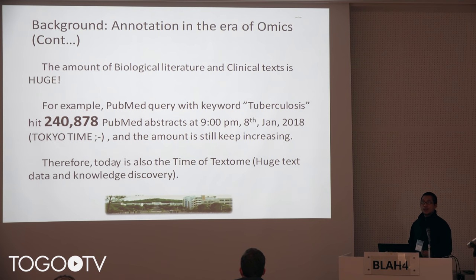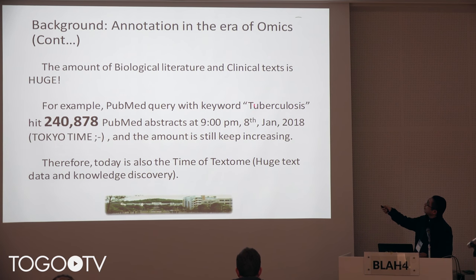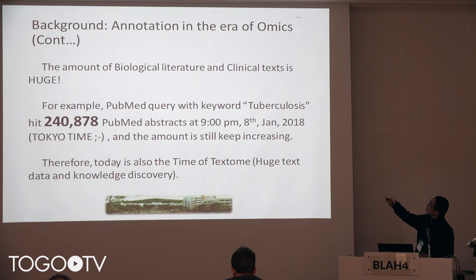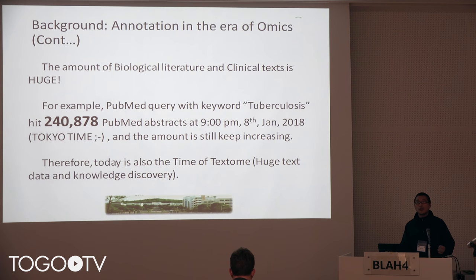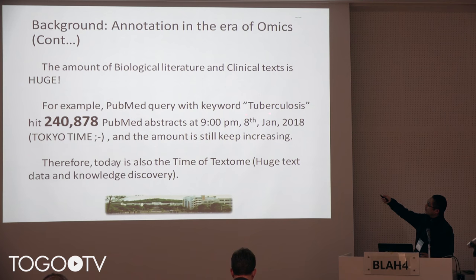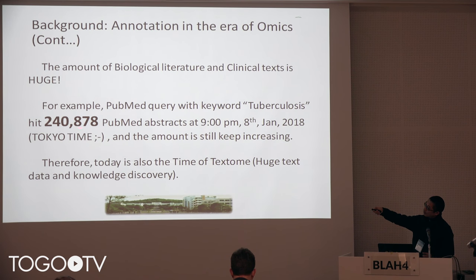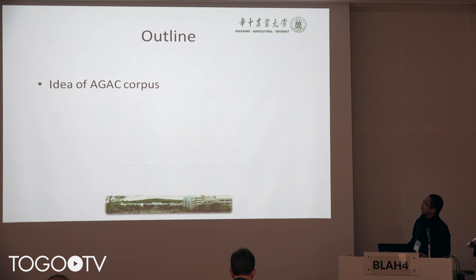There is also another data type which is also very essential — it is called the 'text-ome.' If we call the huge text data, including published literature, papers, and clinical texts, as the text-ome, this is also a very essential resource that you cannot omit. For example, I searched the keyword tuberculosis in PubMed last night and the number was greater than 240,000. There is lots of knowledge, and we cannot omit it.